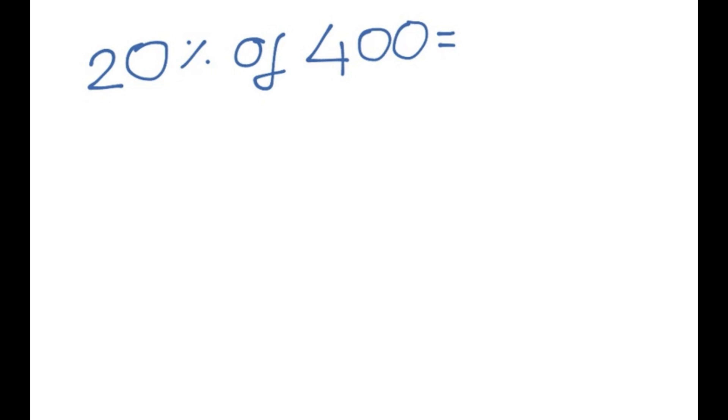Now, this one, a little bit harder, it says 20% of 400. So what you want to do first of all is use our 10% trick. So 10% of 400 is just 400 divided by 10 which is 40. And since we know 10%, we can now find 20%.